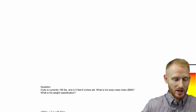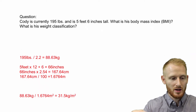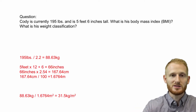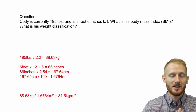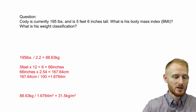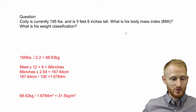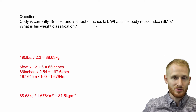So let's go ahead and get to an example question. Cody is 195 pounds and he's five foot six inches tall. What is his BMI and also what is his weight classification? First, we need to convert these units — the 195 pounds and the five foot six inches — from English units to metric units.